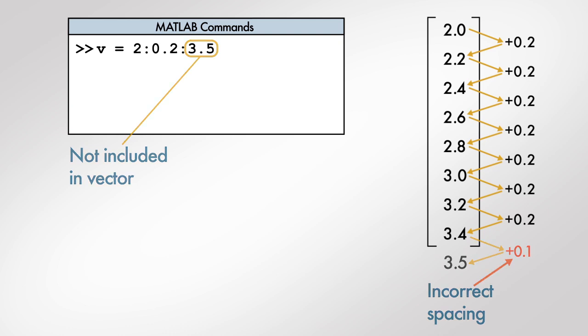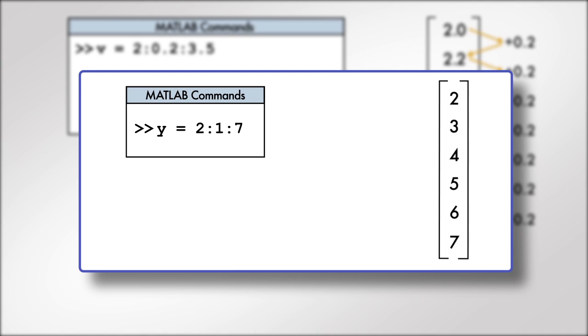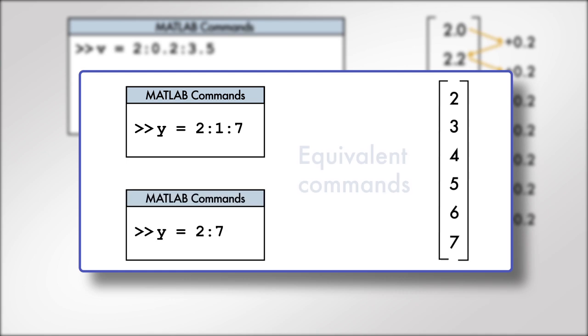Finally, note that there is a shortcut to creating a vector of equally spaced values when the spacing between values is 1. Instead of using this command, a shorter equivalent command omits the spacing between values.